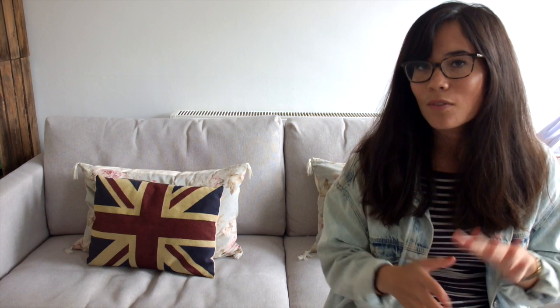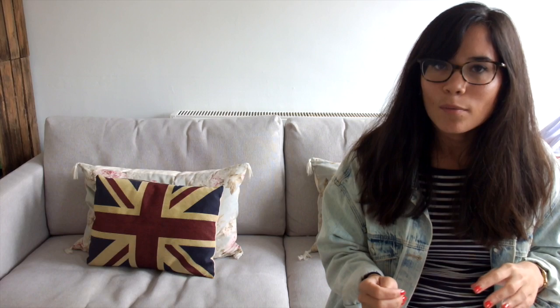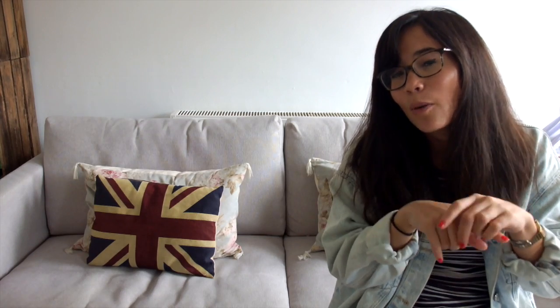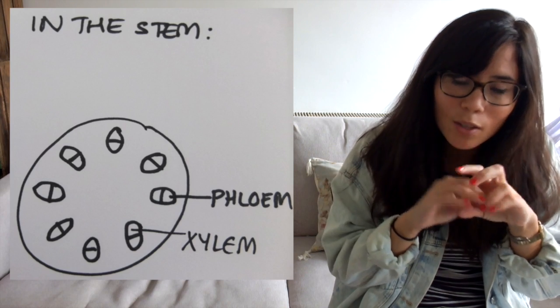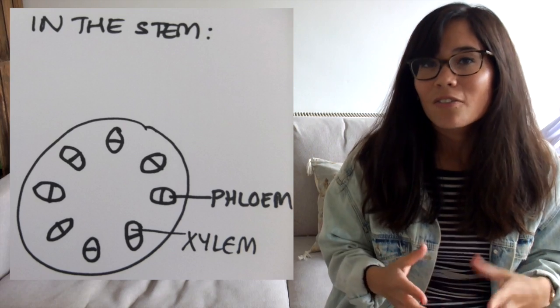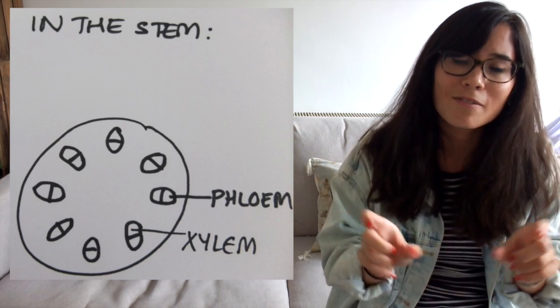The arrangement of the phloem in the root cross-section is: the xylem is the X shape and the phloem surrounds it. Now if we take a cross-section of the stem, the phloem is always on the outside. A helpful way to remember this is to think about aphids — small insects which eat sugar. An aphid bites through the stem and accesses the phloem, which is the first thing it comes to, giving it a ready supply of sugar. So the aphid feeds on the phloem because that's the first thing it hits, which tells you the phloem is on the outside and the xylem is arranged on the inside.